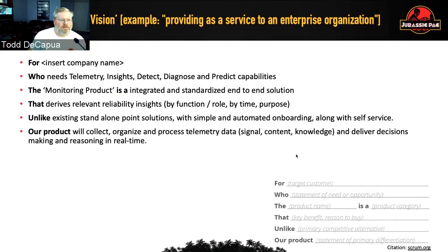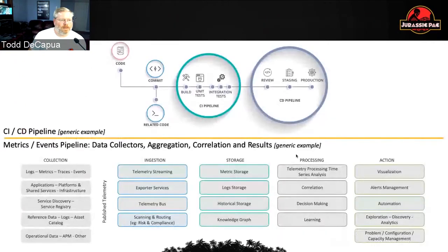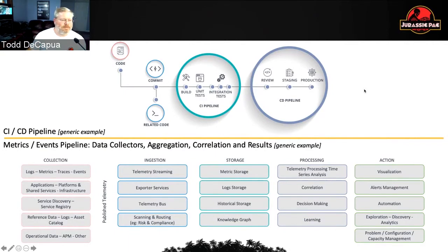We really need to be able to get to results. As we think about that problem, I've got two visualizations here. The top one is the CI/CD pipeline — a very generic example. I know all of you probably know this inside and out, so I won't spend too much time on it.